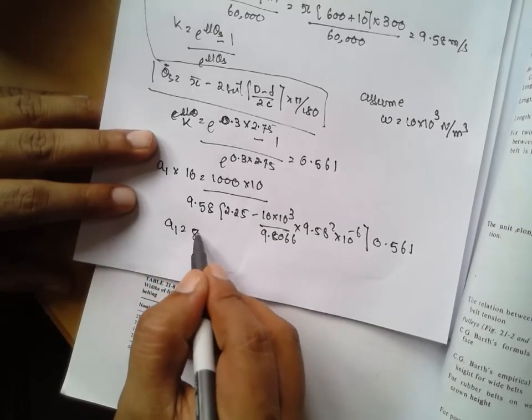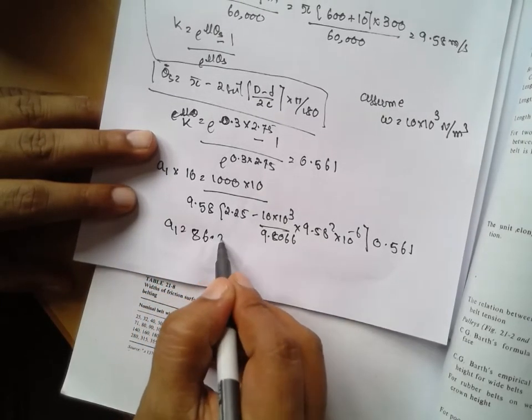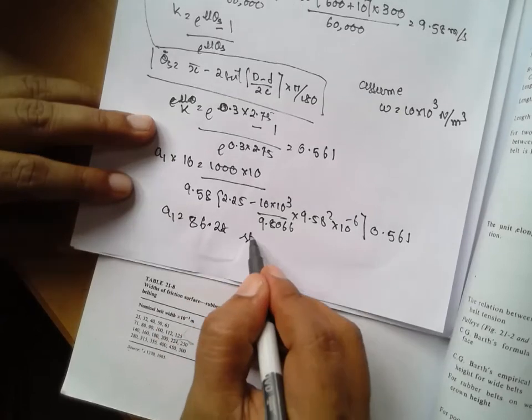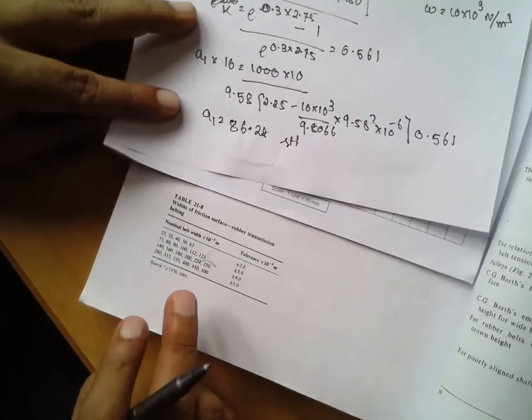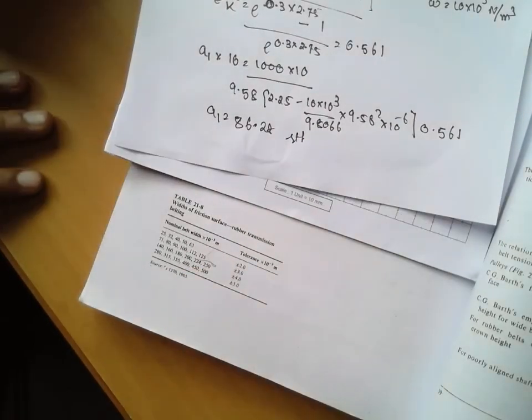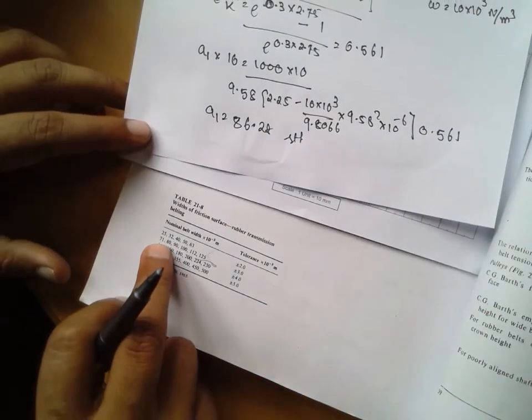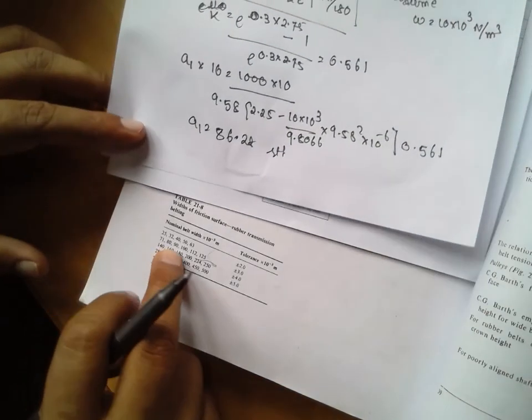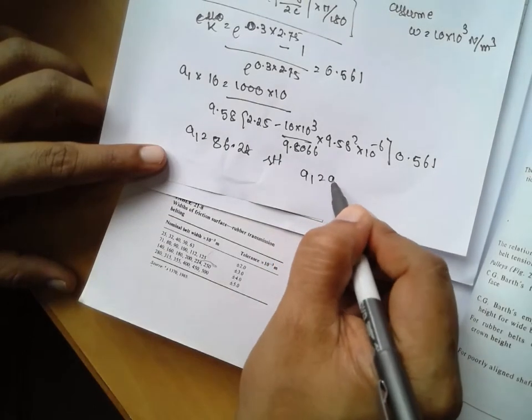But from the standard, this is the standard chart you have to refer. In the standard chart, 86, there is no 86. You have to consider 90. Therefore a is equal to 90 mm.